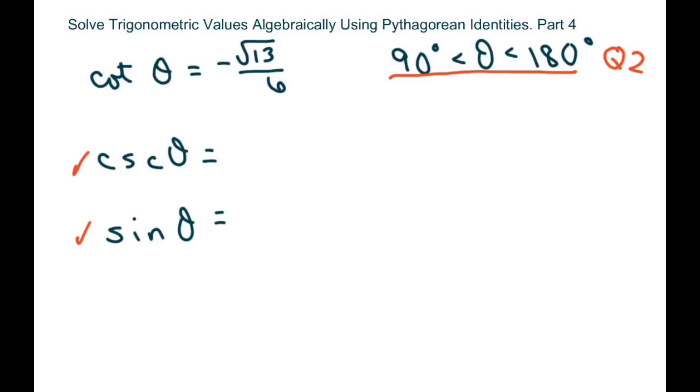In quadrant 2, to solve these we need an x, a y, and an r. In quadrant 2, x is negative, y is positive, and r is always positive.